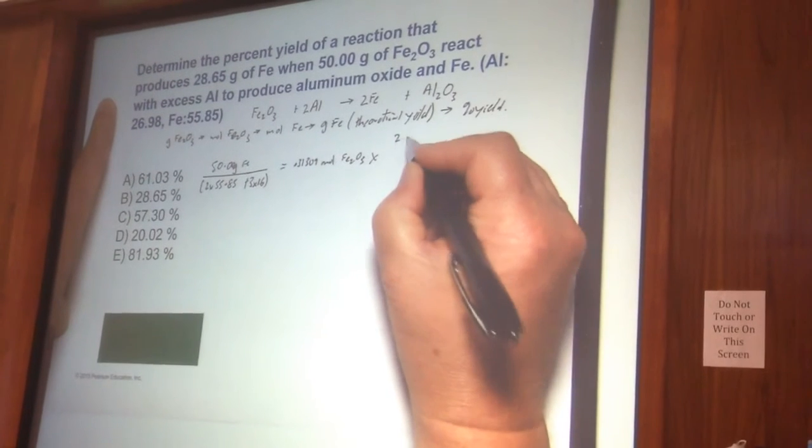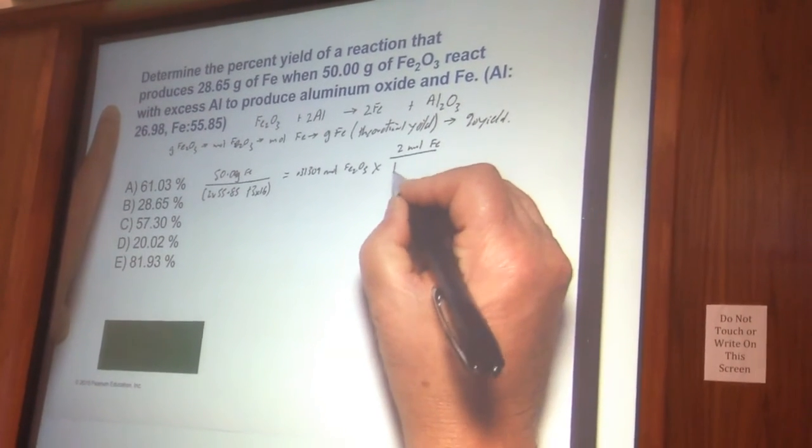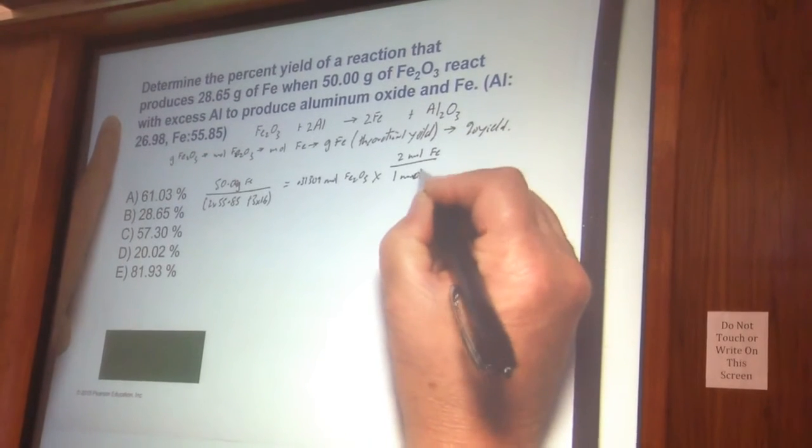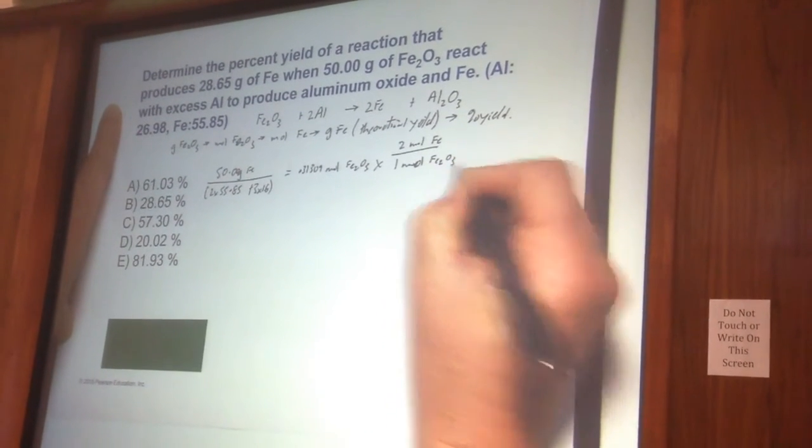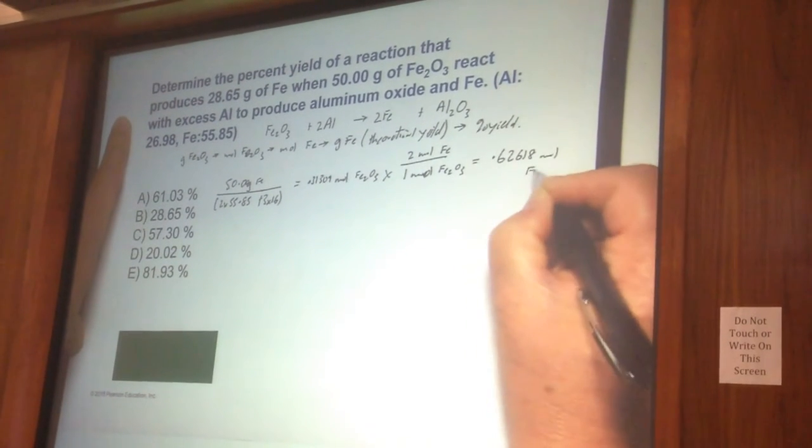And we multiply that by 2 moles of iron for every 1 mole of oxide. So that gives us 0.62618 mole of iron.